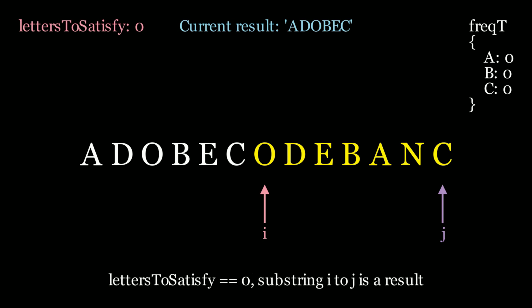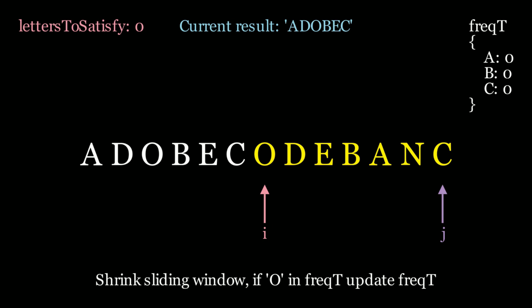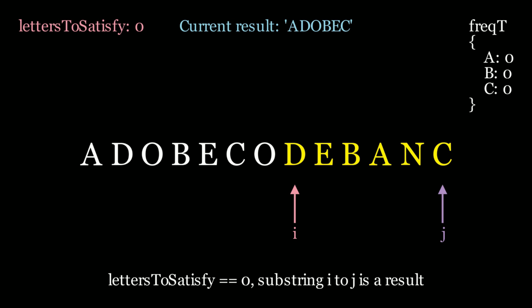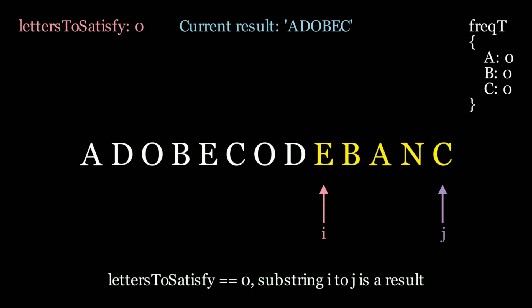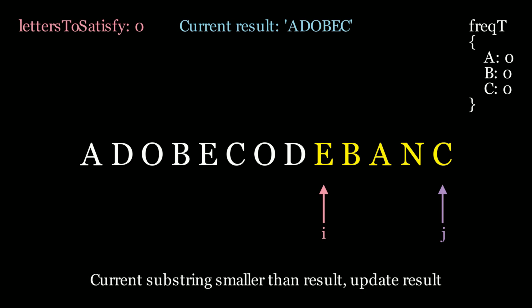Now we have a solution again — letters to satisfy is 0. Let's try to shrink the window. We move i along; d is not in the hash map, but letters to satisfy is still 0, so let's keep shrinking. Move it along again — letters to satisfy is still 0. We actually have a current substring that's smaller than the result, so let's update the result to take the smaller substring. We're now at e, b, a, and c.